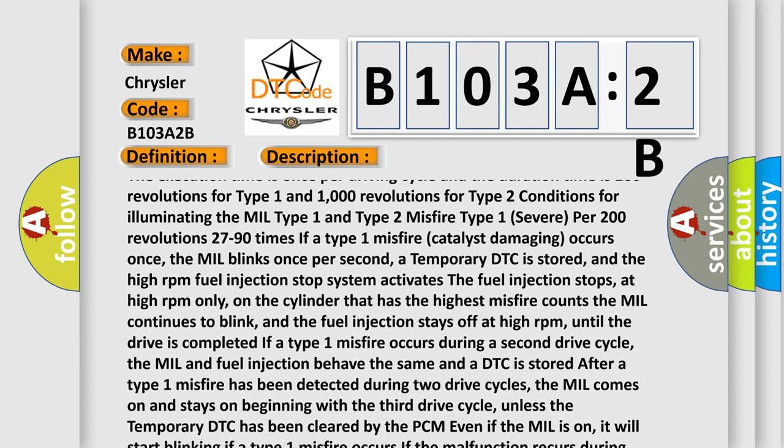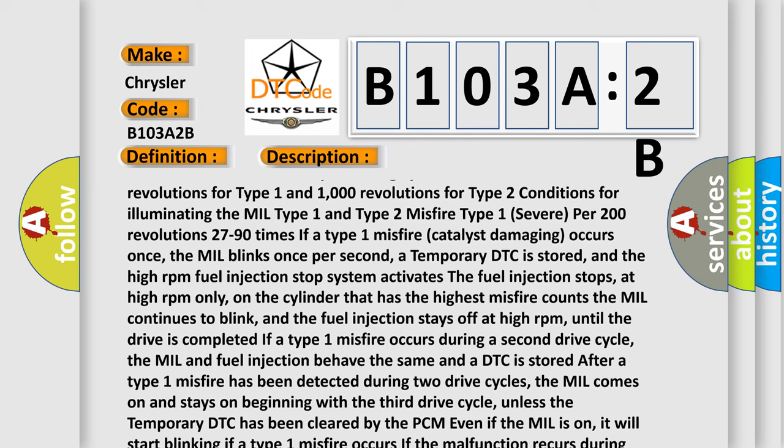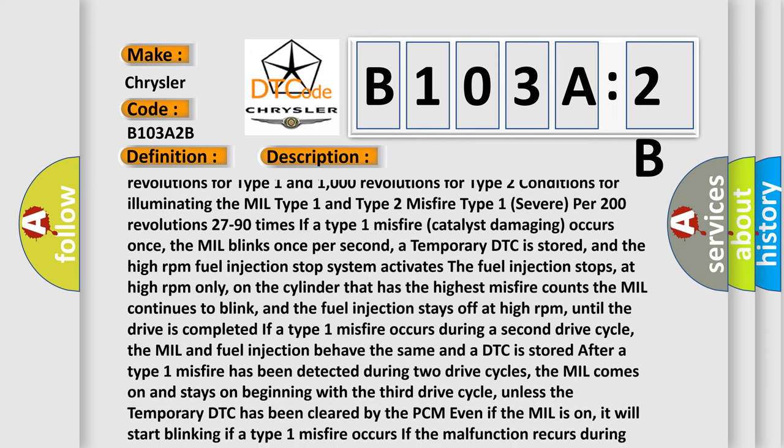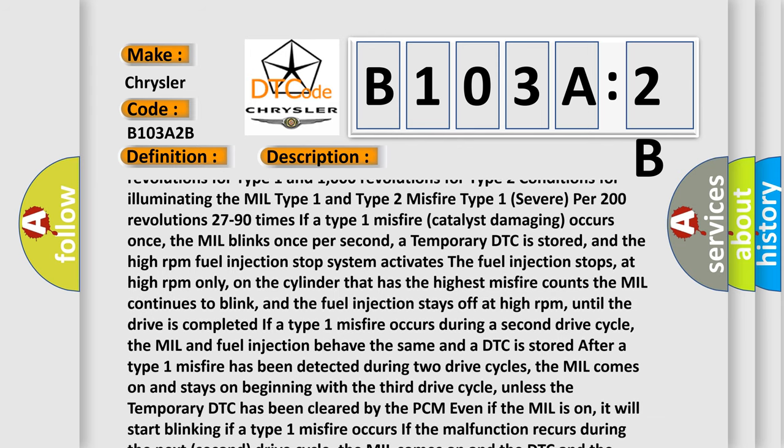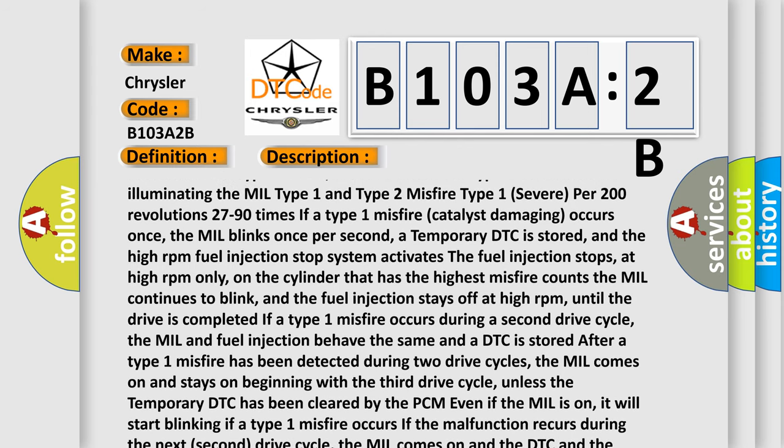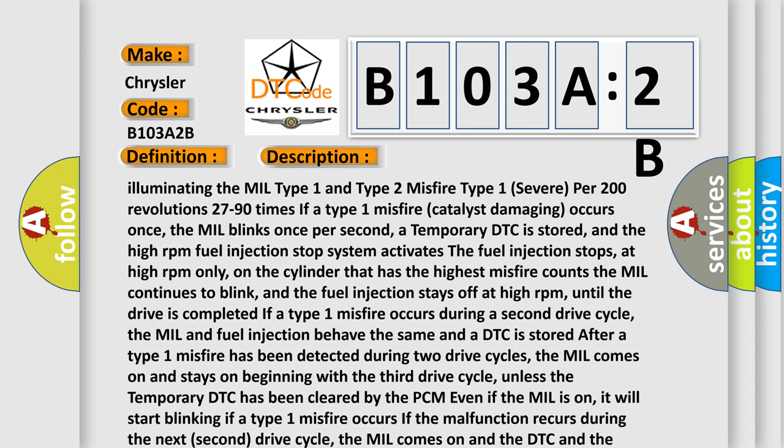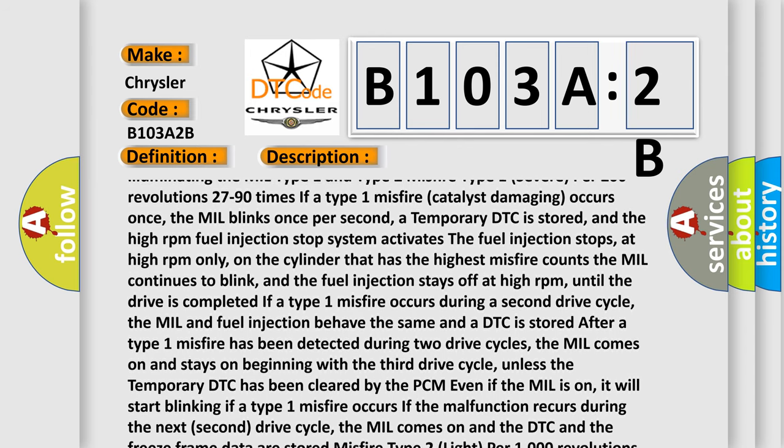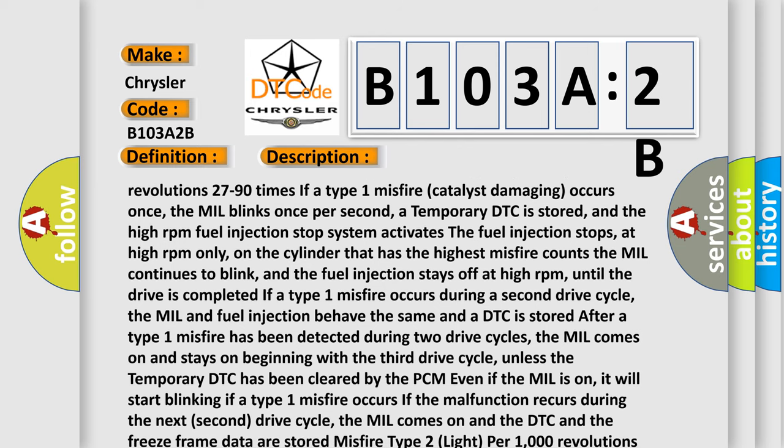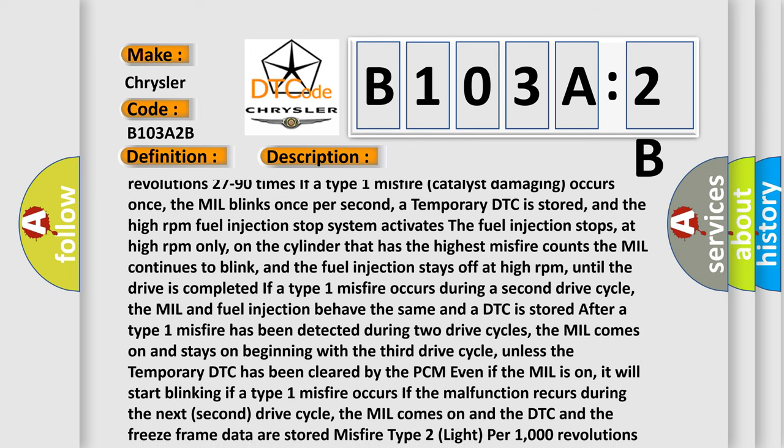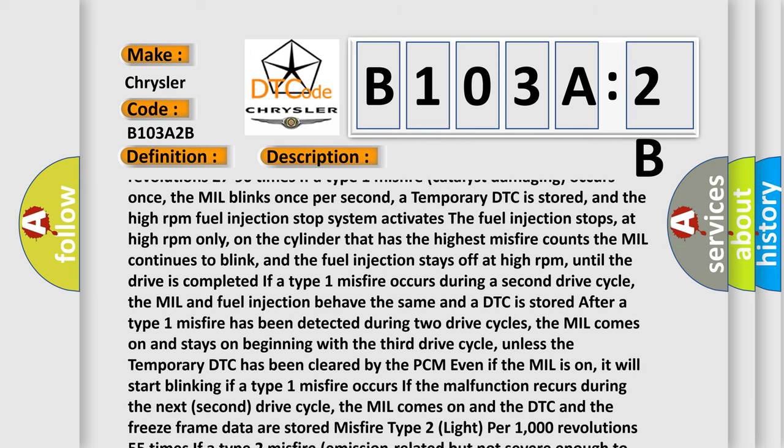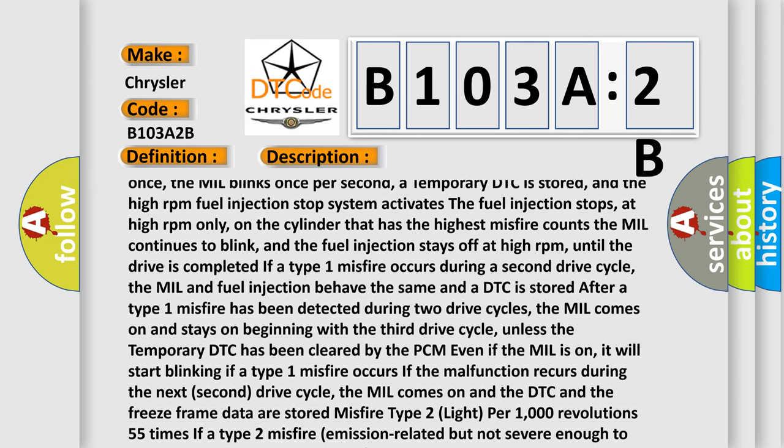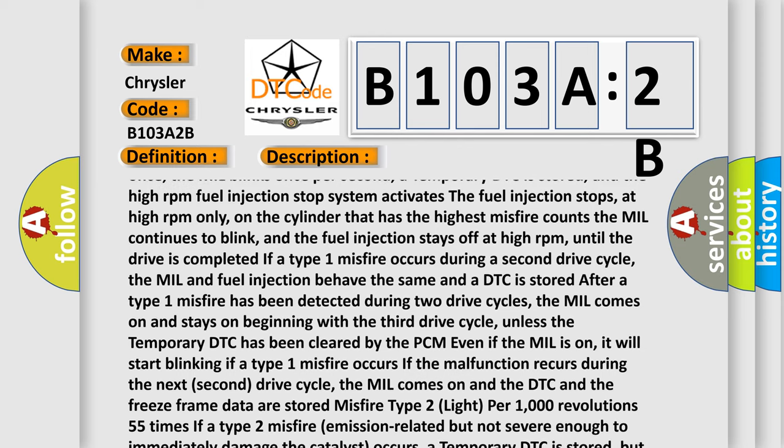DTC P0315 is not set and engine speed is between 525 to 6000 RPM, or DTC P0315 is set and engine speed is less than 1000 RPM. The ignition voltage is between 9 to 18 volts. The engine coolant temperature ECT parameter is between minus 7 and plus 129 degrees Celsius, plus 19 and plus 264 degrees Fahrenheit.